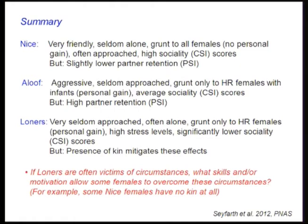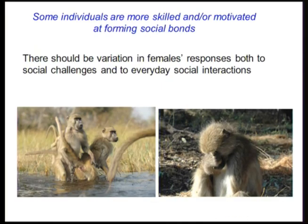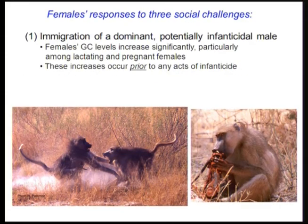Are loners victims of circumstances? What kind of motivation would allow females to overcome these circumstances? For example, some nice females have no kin at all, and yet they retain incredibly high nice scores and high CSI and PSI. We tested the hypothesis that some individuals are more skilled and motivated than others at forming social bonds, looking for variation in females' responses to social challenges. There are three kinds of challenges I want to discuss.